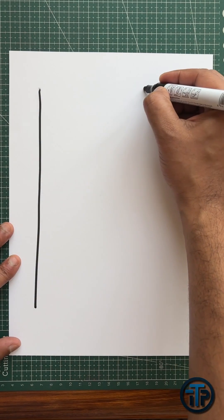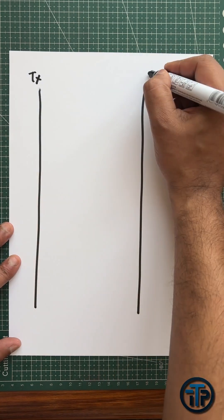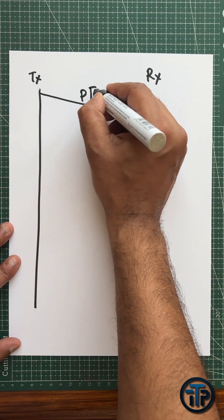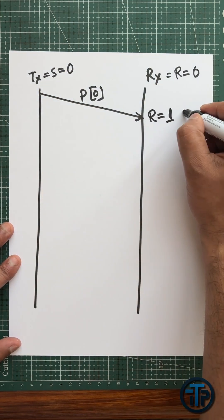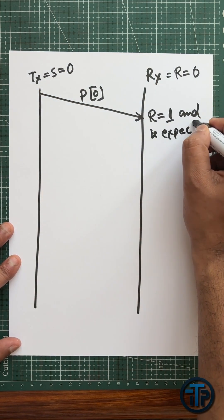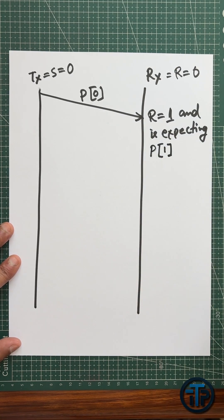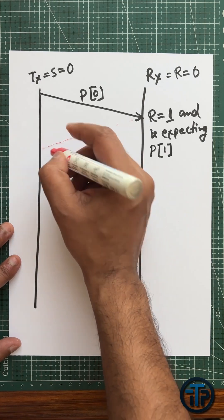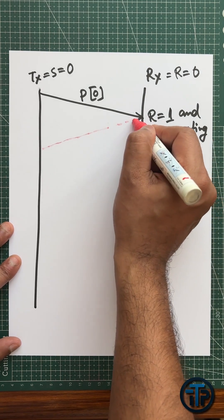There is a transmitter and a receiver. We are sending p equals zero and s equals zero, r equals zero — every initial value is easy. When the packet is received, we are setting the r value to one, and it is expecting packet one, because packet zero has already been received. This is the expected delay time — the expected time when the transmitter was expecting the packet to be received — but this is the actual time.